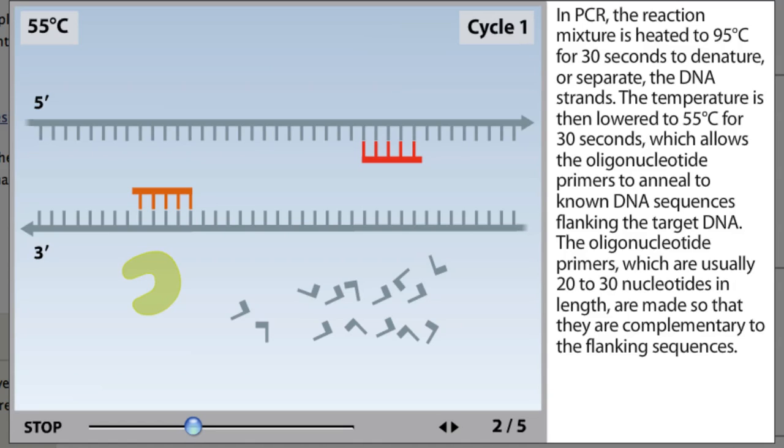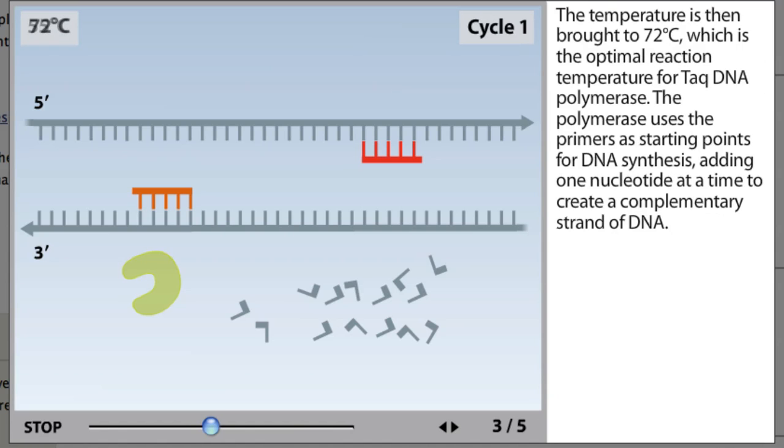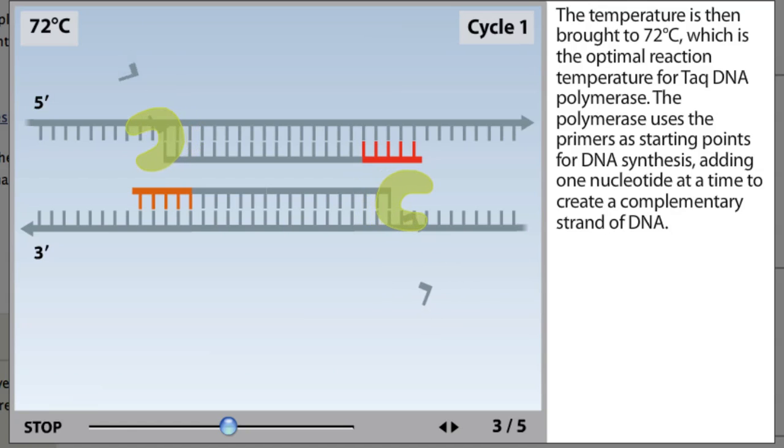The oligonucleotide primers, which are usually 20 to 30 nucleotides in length, are made so that they're complementary to the flanking sequences. The temperature is then brought to 72 degrees Celsius, which is the optimal reaction temperature for Taq DNA polymerase. The polymerase uses the primers as starting points for DNA synthesis, adding one nucleotide at a time to create a complementary strand of DNA.